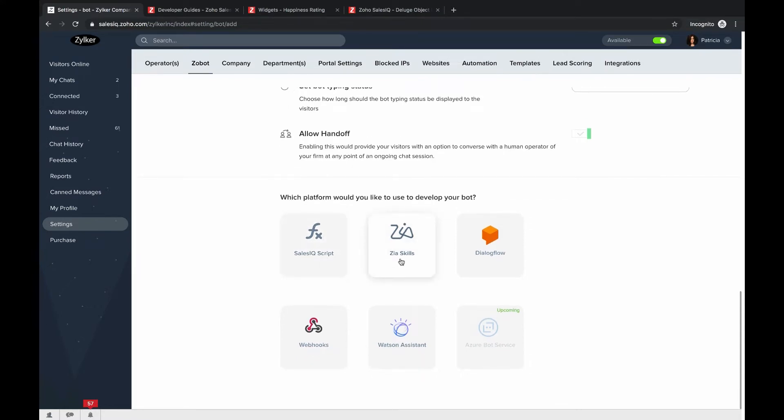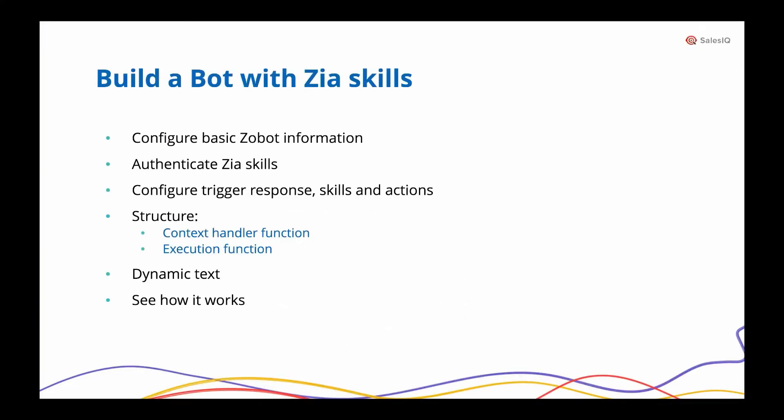Here's an overview of the steps: first, we configure bot information — which we just did. Then we authenticate the Zia Skills platform, configure trigger responses, skills and actions — the foundation on which the Zobot is built — and then structure the context handler function and execution function. Finally, we'll look at dynamic text and see how it all works.